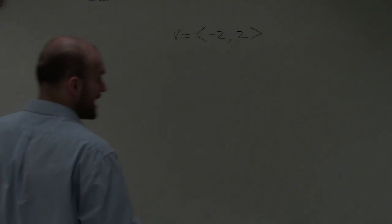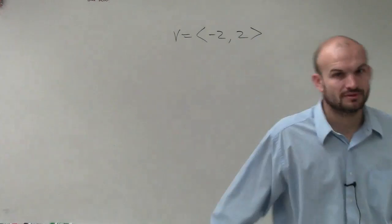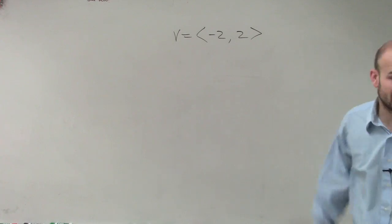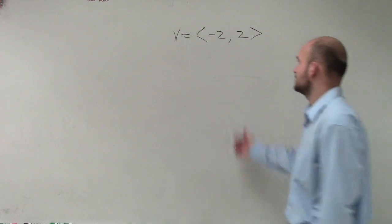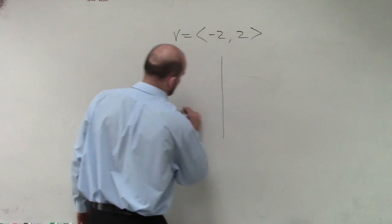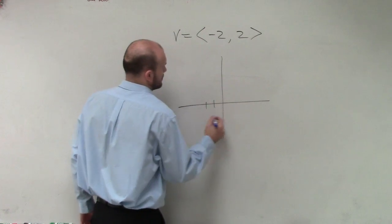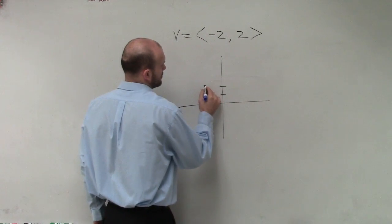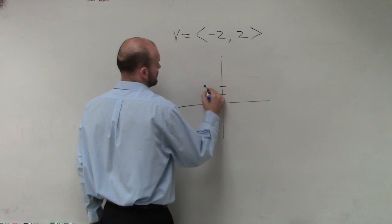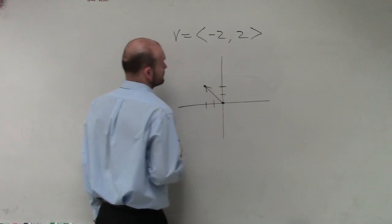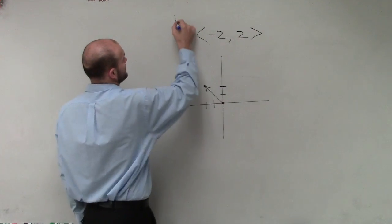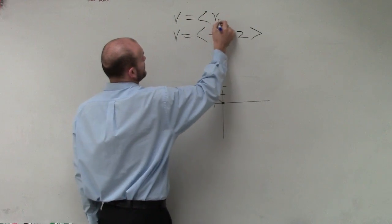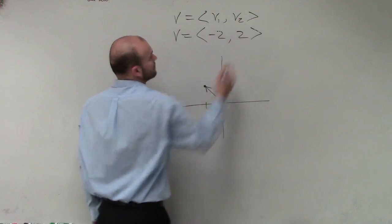I have a vector, negative 2 comma 2. This vector is in component form. So let's graph it. Now, because component form is this.